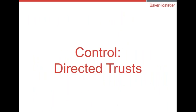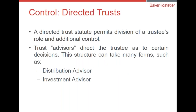Now we turn to the issue of control — directed trusts. Many states have enacted directed trustee statutes that permit division of a trustee's traditional role, allowing for additional levels of control at the family level. These are sometimes referred to as trust advisors or trust directors. The advisors direct the trustee as to certain decisions. The most common forms of trust advisors are distribution advisors and investment advisors. Occasionally you can also have a business advisor to direct what happens with specific holdings. Within their sphere, the trust advisor is like a mini trustee over that particular decision.